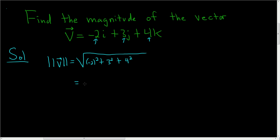So we end up with the square root of, let's see, negative 2 squared is 4, 3 squared is 9, and 4 squared is 16. So this is the square root of, well, 4 plus 9 is 13, so we get 13 plus 16, so it's equal to the square root of 29.